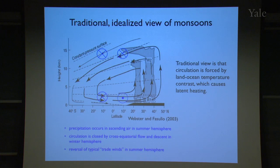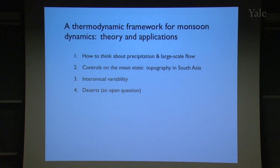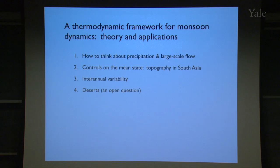It's common, even in the modern-day monsoon literature, to see statements to the effect that the latent heating associated with precipitation is driving this inter-hemispheric circulation. We've come beyond that. We know now that precipitation can't really be thought of as a forcing for the large-scale flow — it's really part of the solution.